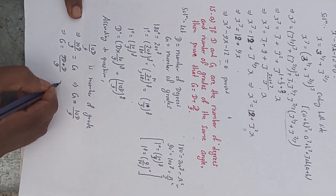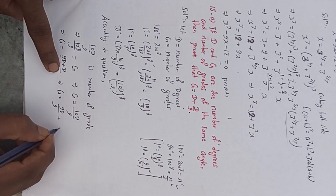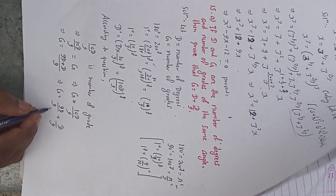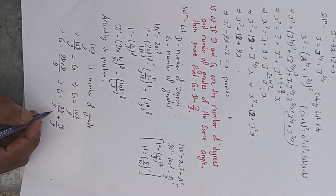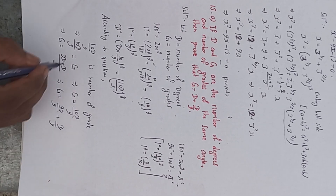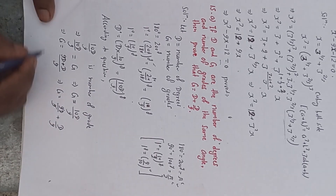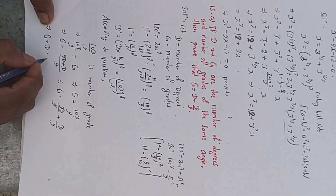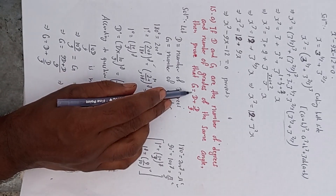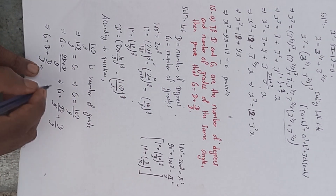From this step: g is equal to 10d by 9. We can split 10d as 9d plus d. So g is equal to 9d by 9 plus d by 9. The 9 in 9d cancels, giving g is equal to d plus d by 9. This is the required result — proved.